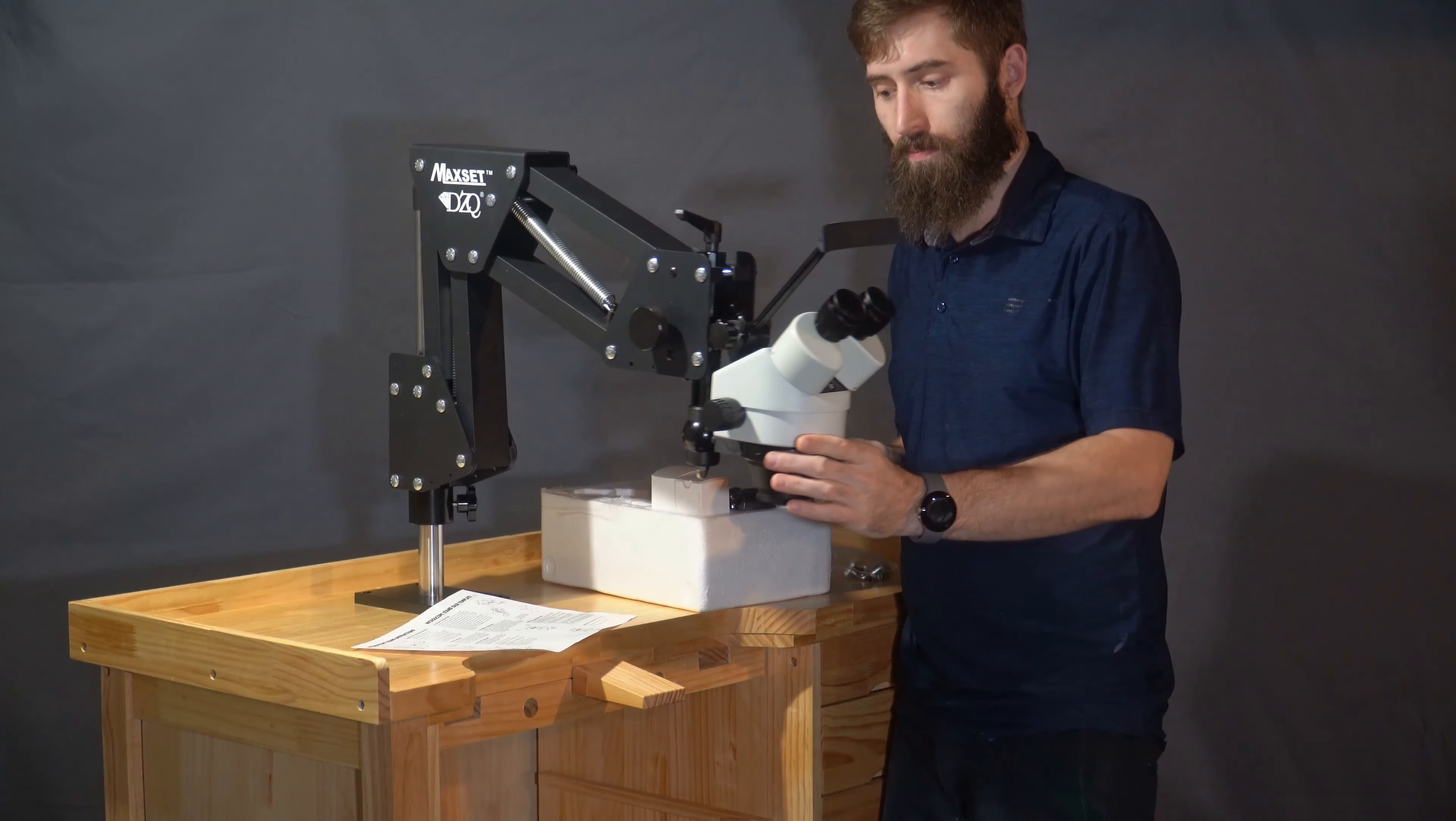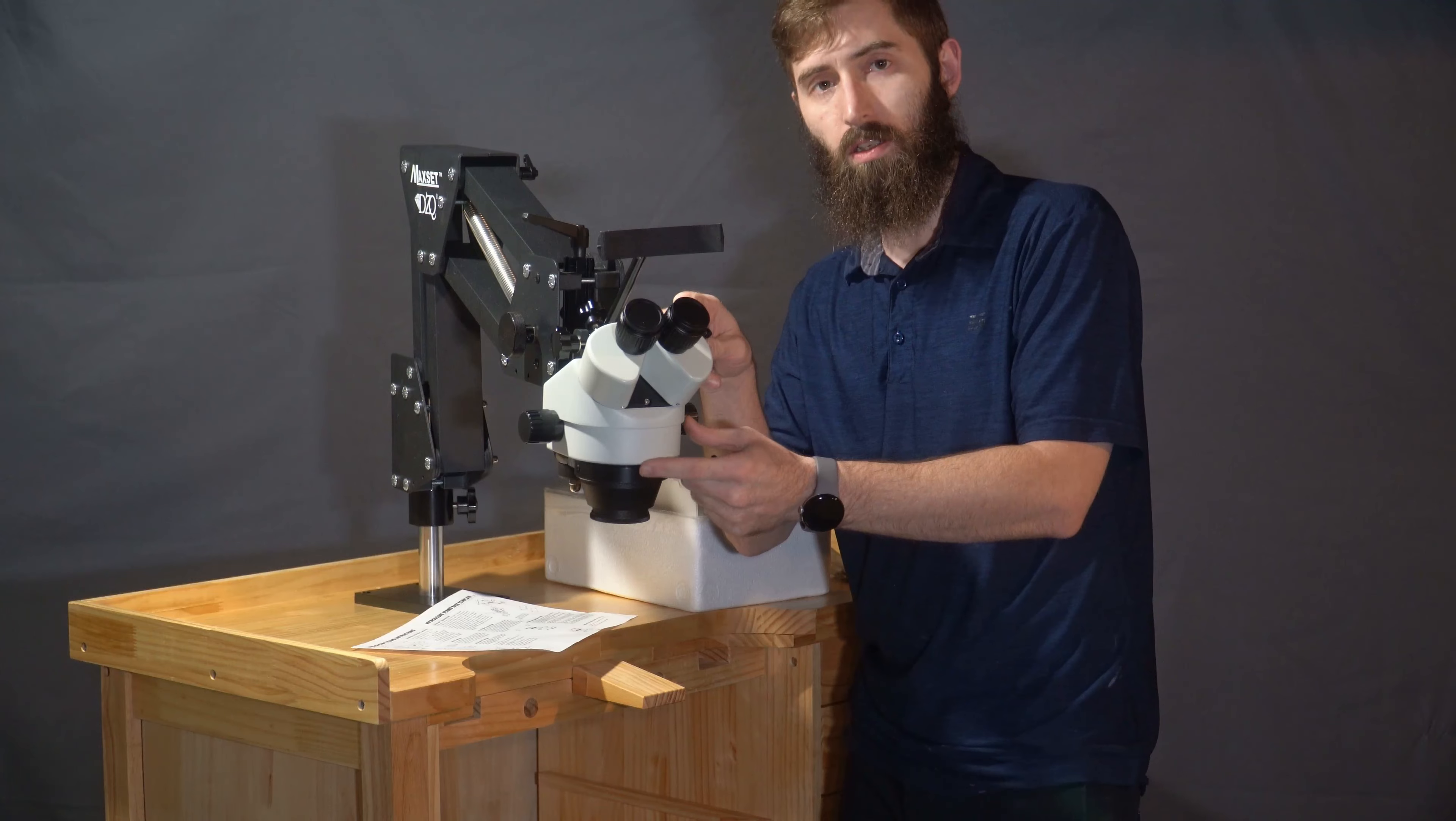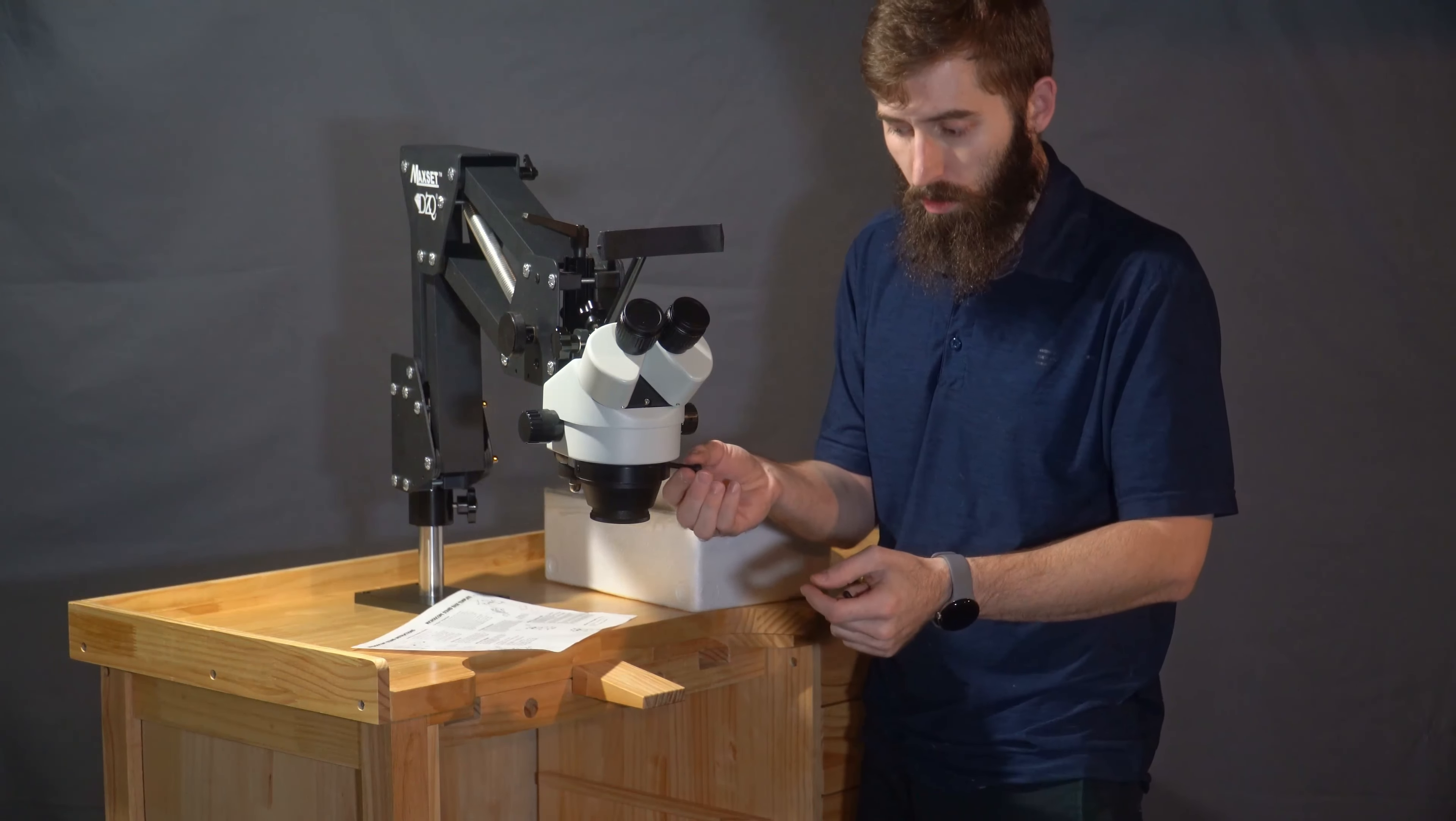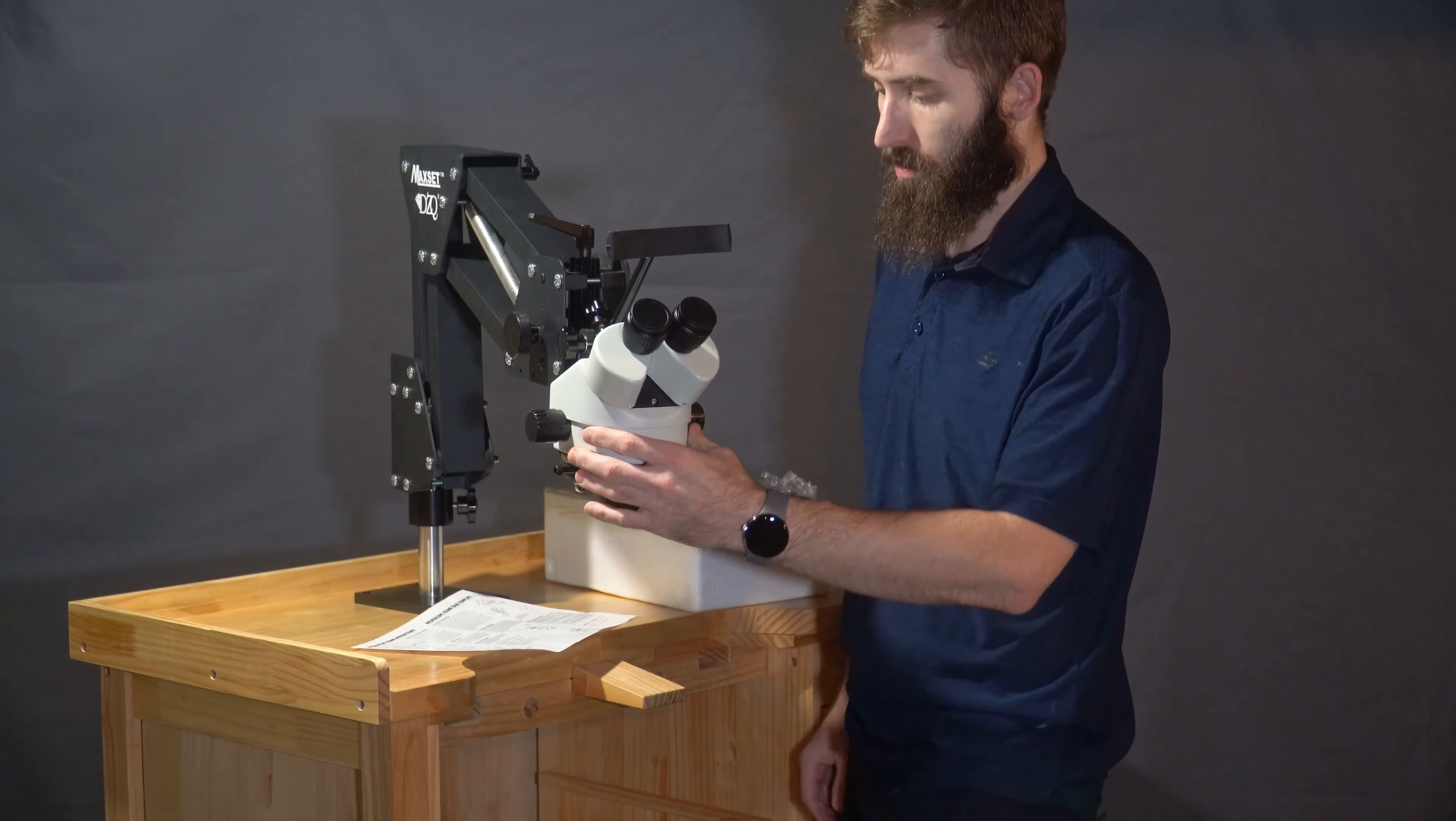One thing I did notice is that the only screws that fit in the holes to tighten this whole microscope part onto the mount are these screws. They're pretty long. I don't think they're the right thing, but I'm going to use them anyway because I don't really want this moving around. Now it doesn't move at all.